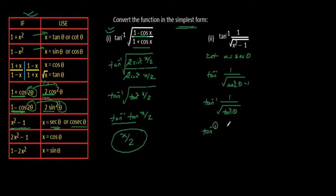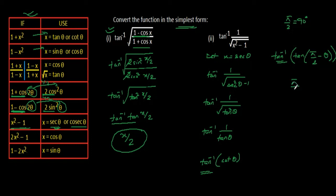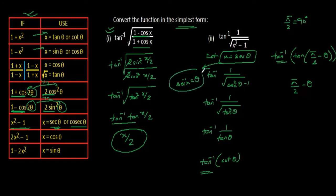Now tan inverse will be 1 by square root of tan square theta, and the square root will be cancelled, left with only tan theta. So it becomes tan inverse of 1 by tan theta, which can be written as cot theta. We know cot theta can be written as tan of pi by 2 minus theta. So tan inverse tan of pi by 2 minus theta gives pi by 2 minus theta. Since x equal to sec theta, multiplying both sides by sec inverse gives sec inverse x equal to theta. So in place of theta, we get pi by 2 minus sec inverse x.